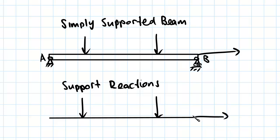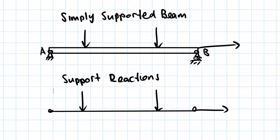So now we have to draw these support reactions. We start with A - it's a pin joint, so we know that it can support horizontal loads and vertical loads.